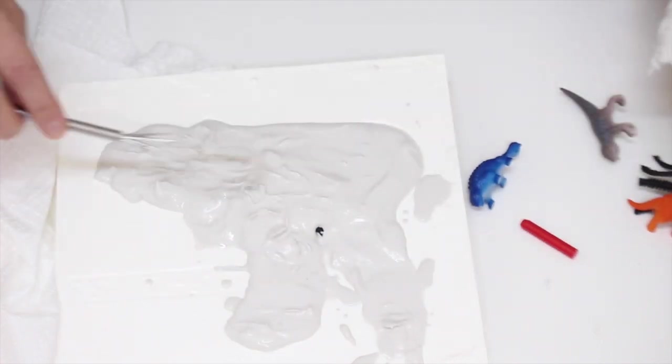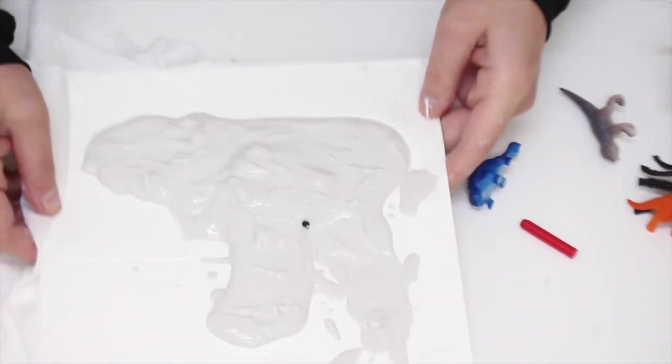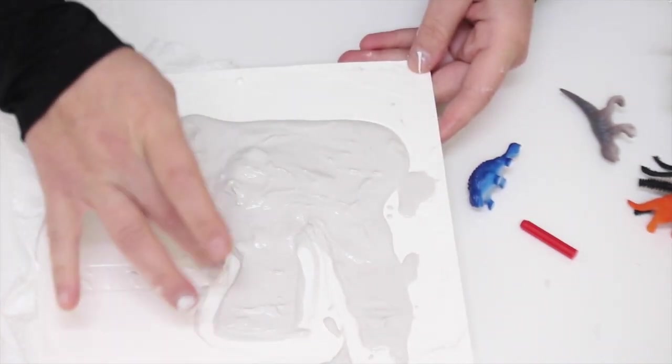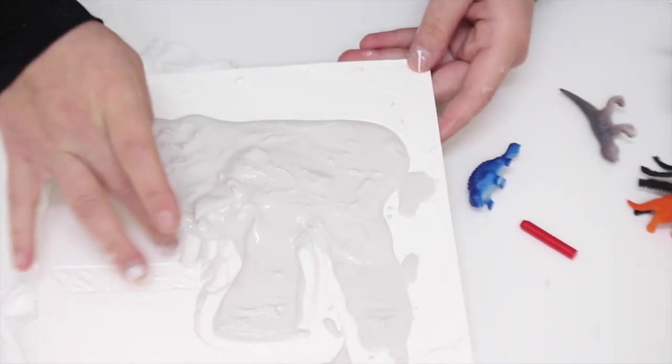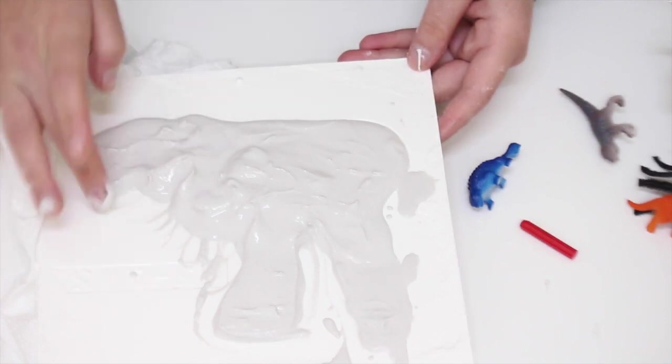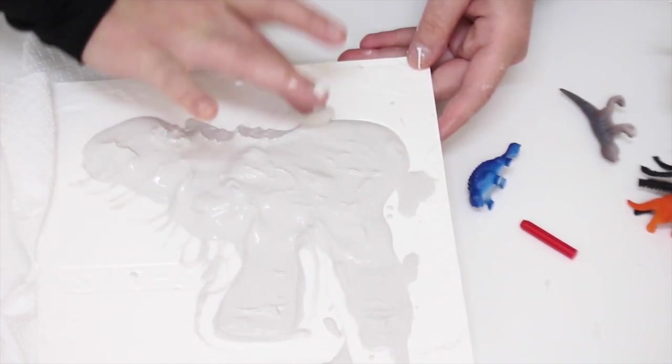As you can already see, before the plaster was quite runny and now it's already setting, so it shows you how fast you have to work with it. Once you've got enough to cover all your figurines on top, you can use your fingers to smooth all the sides.